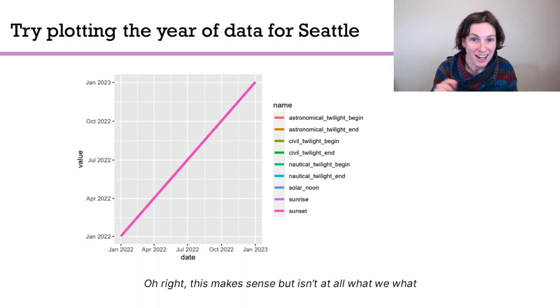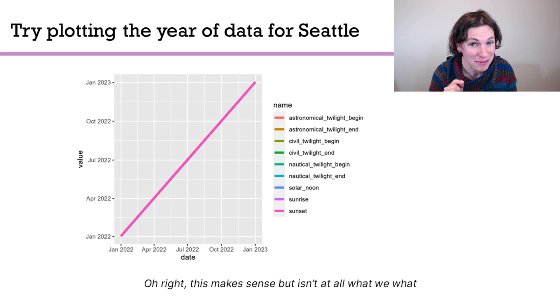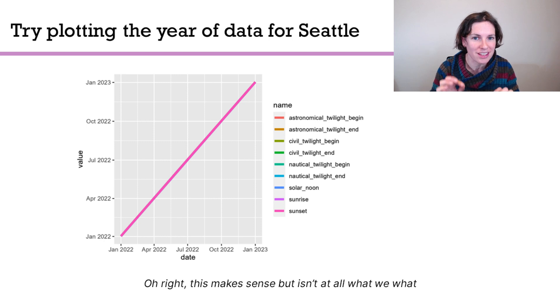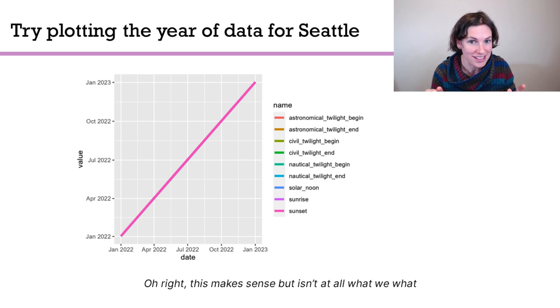So I use that API and I query for each day of the year: what is the sunrise, sunset, and other times? I take that year's worth of data and let's try plotting it in R. Uh-oh, this is a straight line. This is not what we wanted. It turns out what's happening is that it's not just returning the time of the sunrise and sunset.